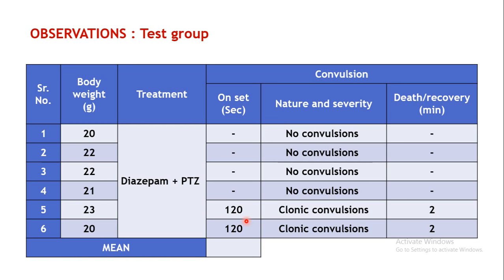Comparing with the control group, where onset ranged from 55 to 75 seconds, in the test group only two animals showed convulsions and their onset was delayed to 120 seconds. Diazepam has delayed the onset of convulsions, and in four animals it has completely abolished them. To calculate the average onset for the test group, since no convulsions occurred in the first four animals, the average is taken only of the two values — that is, 120 divided by 2, which equals 120 seconds.